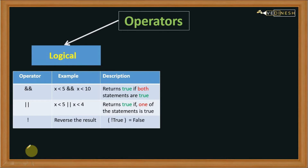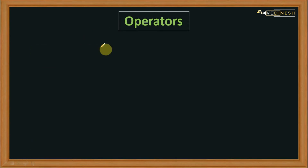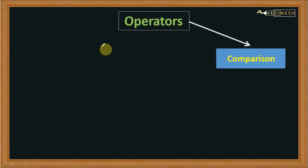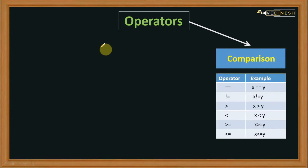In the previous lecture we covered logical operators. In this lecture we will see the next operator, that is the comparison operator. As the name suggests, these operators are going to compare two entities. Let's see comparison operators. The first one is double equals to.